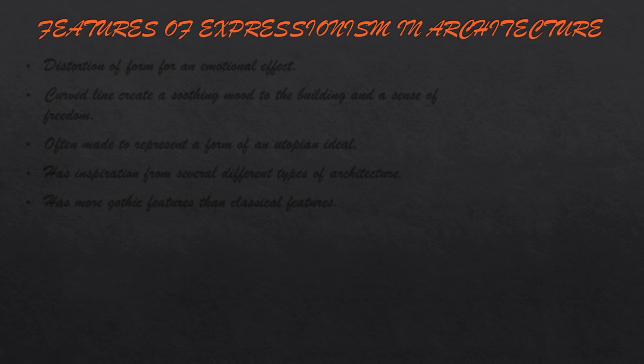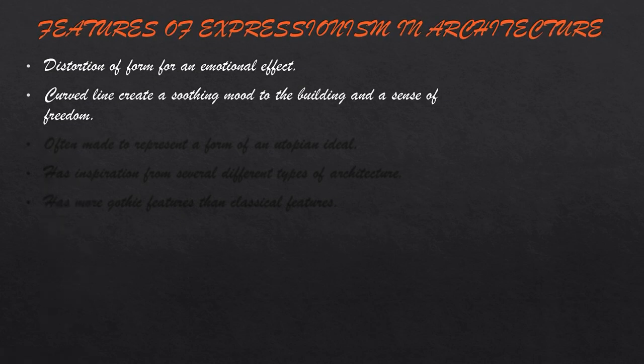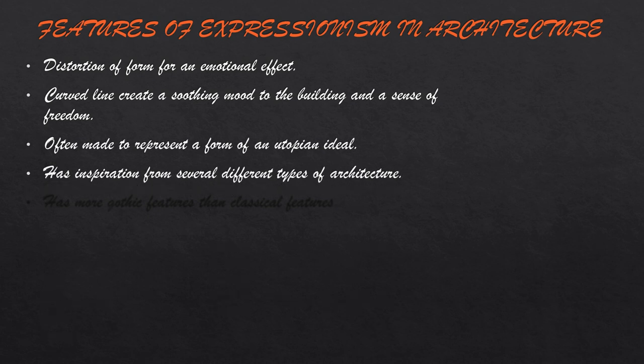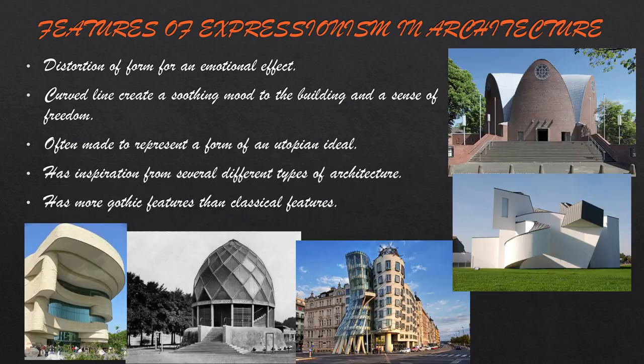Features of Expressionism in Architecture include: distortion of form for an emotional effect; curved lines that create a soothing mood and a sense of freedom; buildings often made to represent the form of a utopian item; inspiration from several different types of architecture; and more Gothic features than classical features.